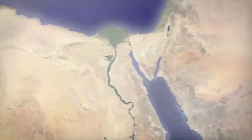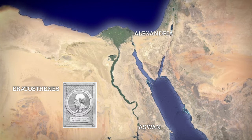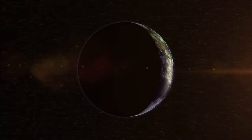Eratosthenes was the chief librarian at the Library of Alexandria in Egypt. He was also a mathematician, astronomer, and geographer. One day, without leaving Alexandria, he set out to measure the circumference of the Earth using only mathematics.